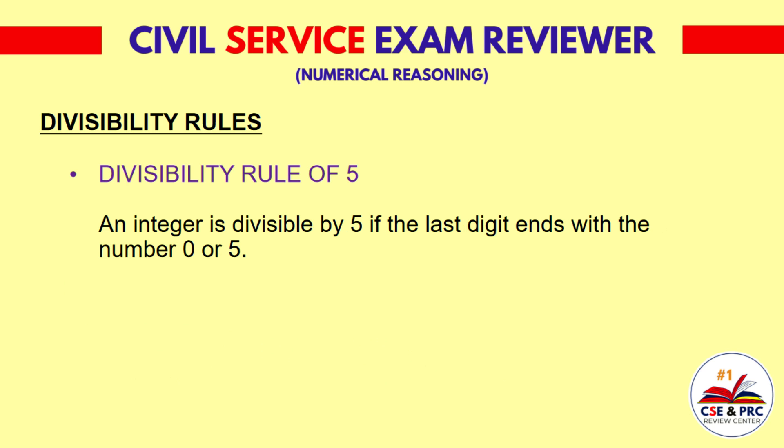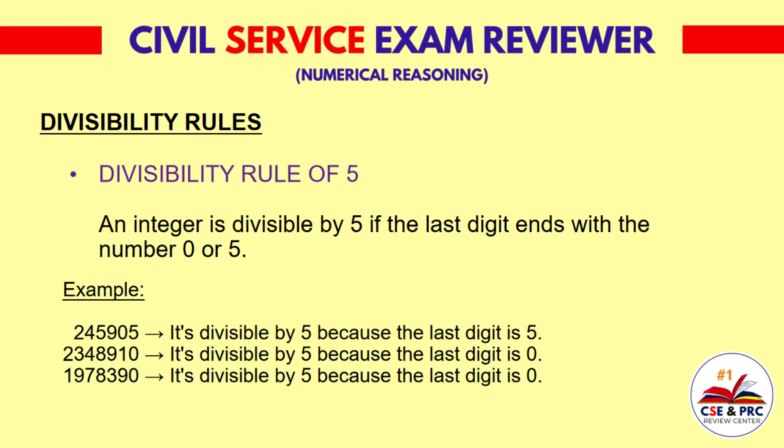Divisibility Rule of 5: An integer is divisible by 5 if the last digit ends with 0 or 5. For example, 245,905 is divisible by 5 because the last digit is 5. 2,348,910 is divisible by 5 because the last digit is 0, and 1,978,390 is divisible by 5 because the last digit is 0.